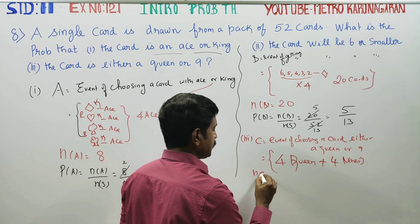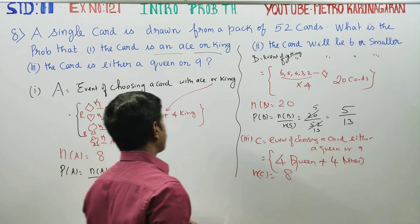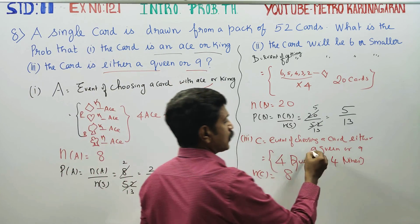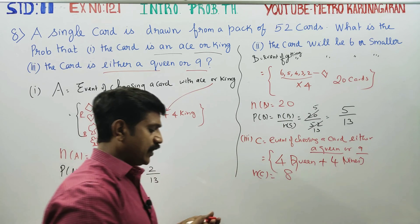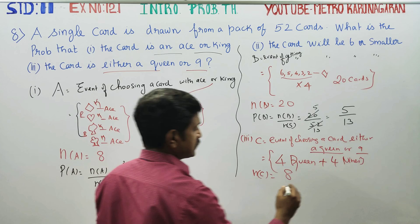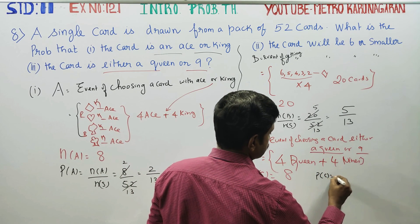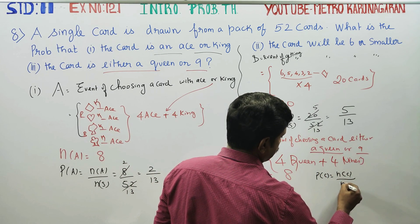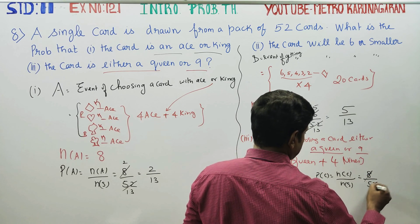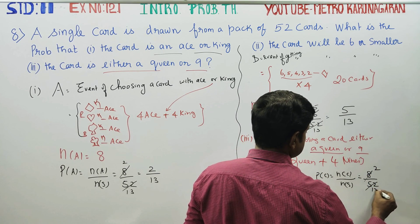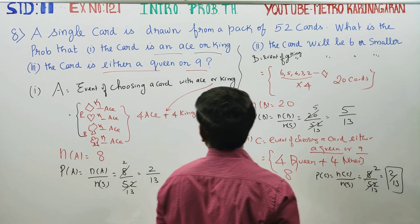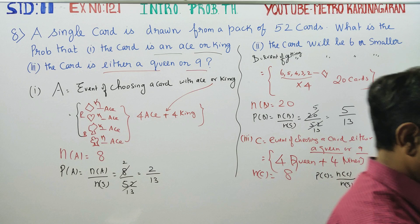Total n of C equals 8 cards — choosing either a queen or 9. There are 4 queens and 4 nines. Probability of C is equal to n of C by n of S, which is 8 by 52, giving 2 by 13. Your final answer is 2 by 13. Thank you.